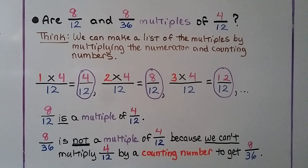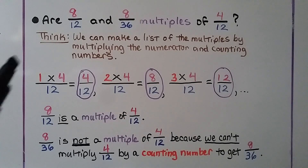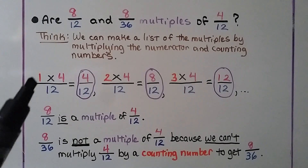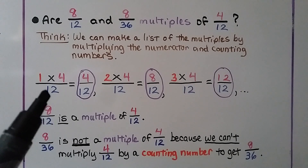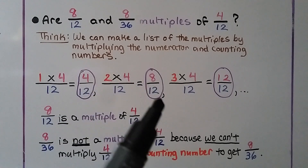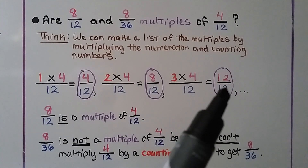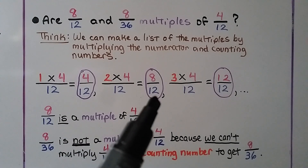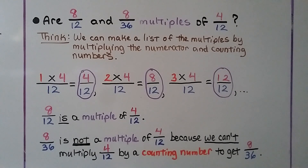Are 8/12 and 8/36 multiples of 4/12? We list multiples of 4/12 by multiplying the numerator 4 by counting numbers and keeping the denominator 12: 4/12, 8/12, 12/12. So 8/12 is a multiple of 4/12. But 8/36 is not a multiple of 4/12, because we can't multiply 4/12 by a counting number to get 8/36 — it has a different denominator.